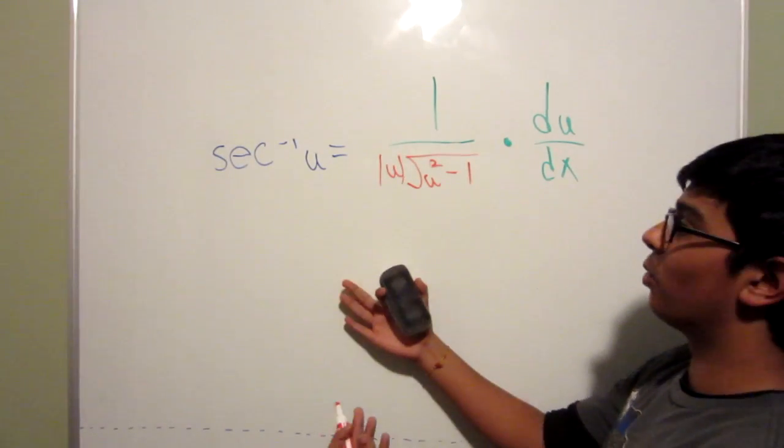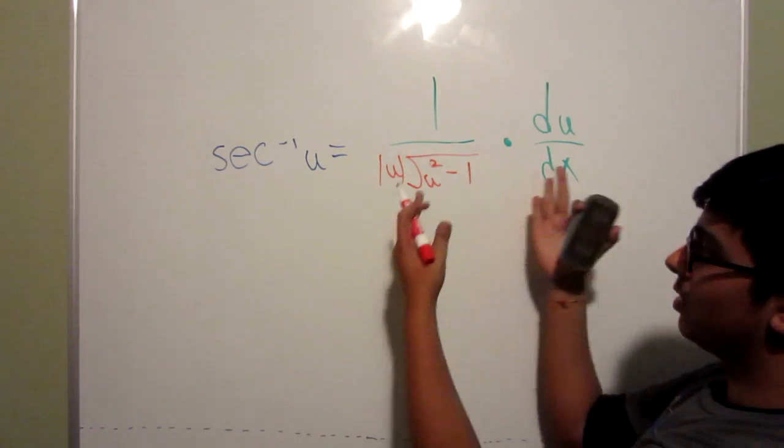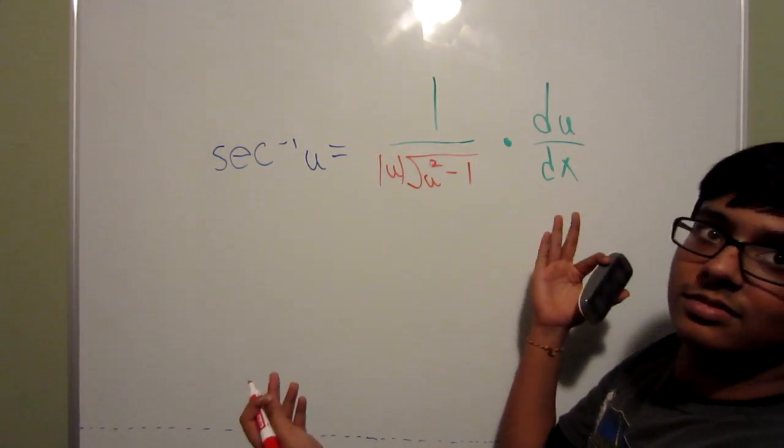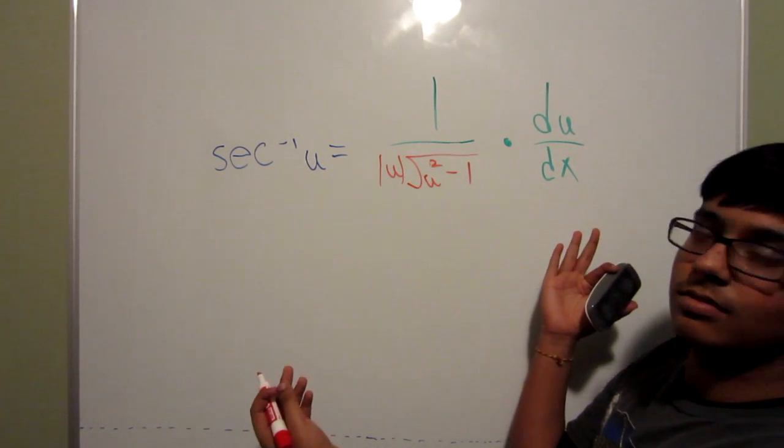There you go, the formula for secant inverse of u. A good way to just remember that this is the secant inverse of u is that it has the absolute value in front.